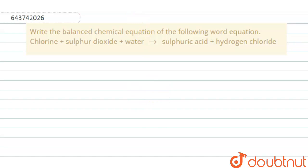We have to write the balanced equation for the following word equation: chlorine reacts with sulfur dioxide and water to form sulfuric acid and hydrogen chloride. First, let us write down the reaction, then we will see how to balance it.